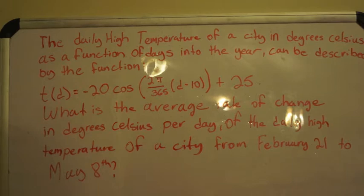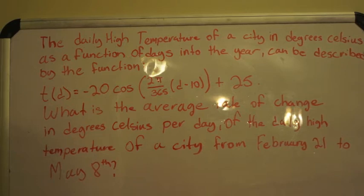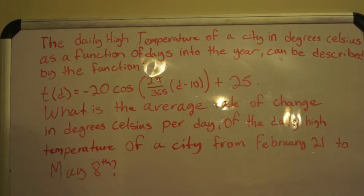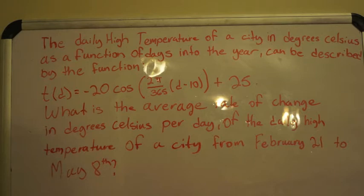The question we will be looking at today: The daily high temperature of a city in degrees Celsius as a function of days into the year can be described by the function t(d) = -20 cos(2π/365(d-10)) + 25. What is the average rate of change in degrees Celsius per day of the daily high temperature from February 21st to May 8th?